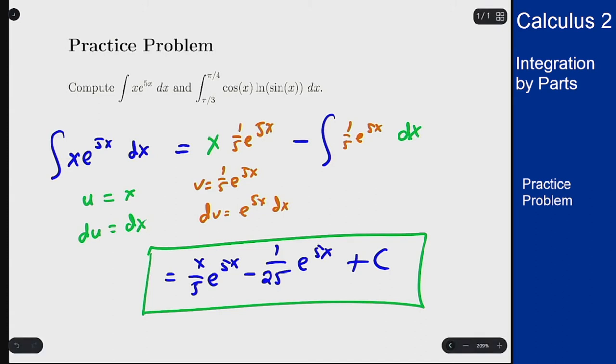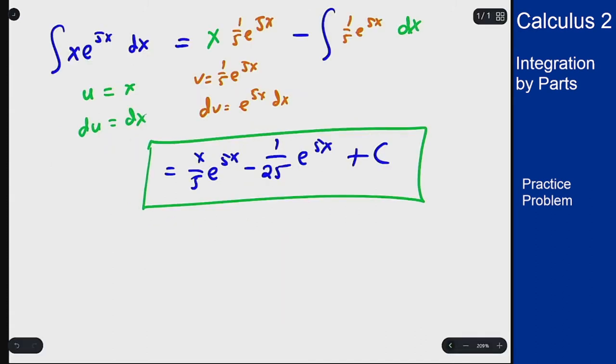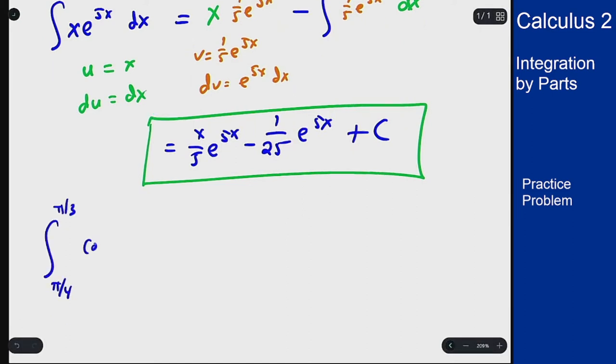The second part we have a definite integral that's going to involve both substitution and integration by parts. The integral from pi over 4 to pi over 3 of cosine of x times natural log of sine of x dx. Now first we look at this, we see we have an inside function, we have a sine function inside the logarithm.